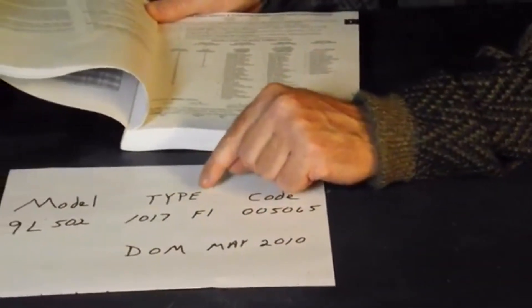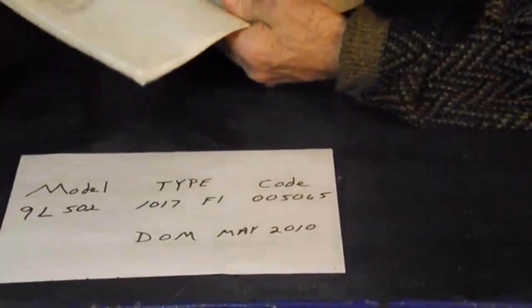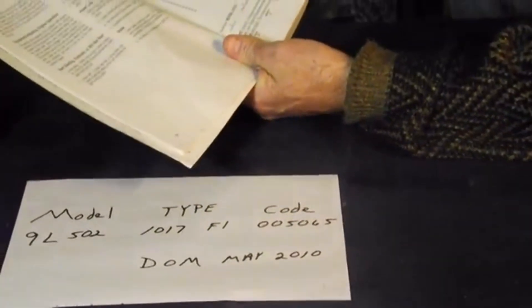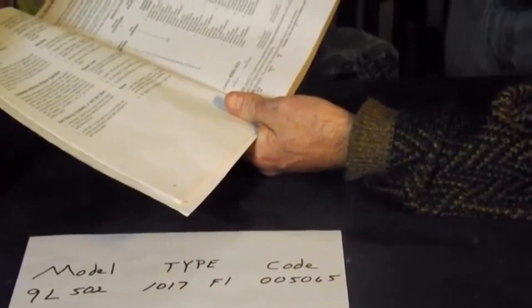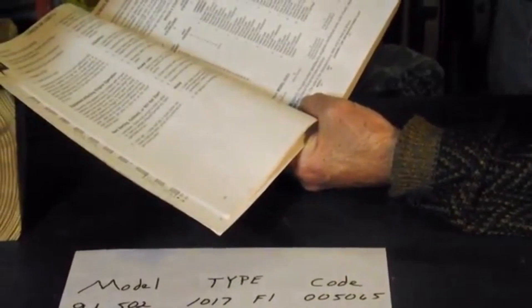Then we talk about the type. Now the type number identifies the engine mechanical parts, color of paint, decals, governor speed, and original equipment manufacturer.